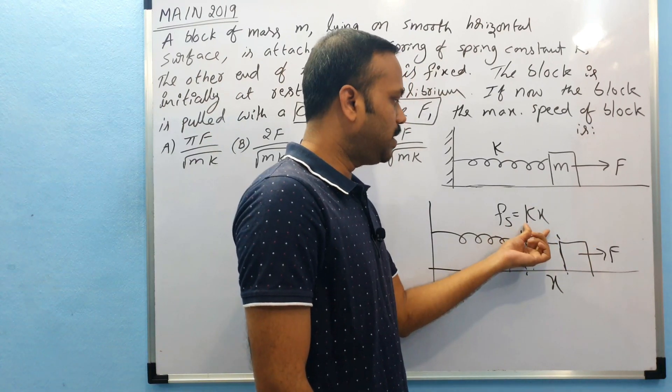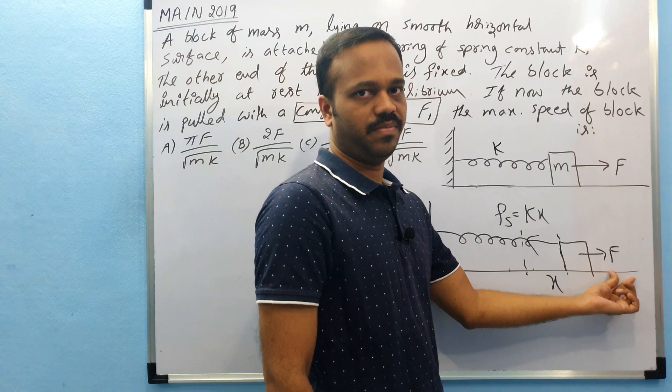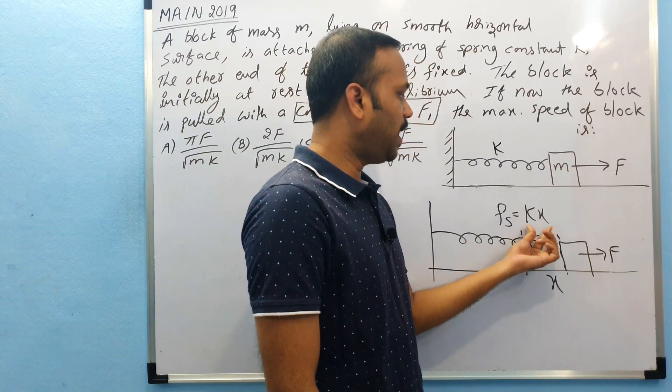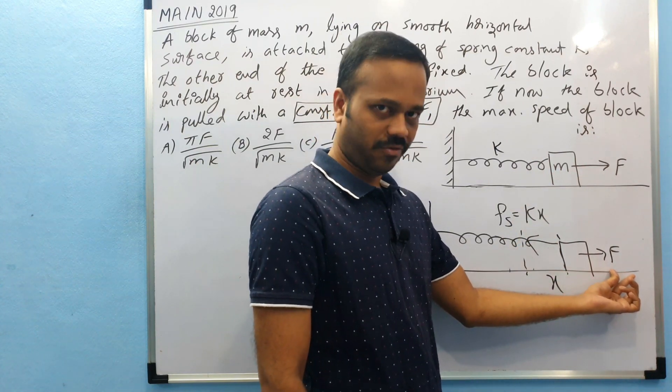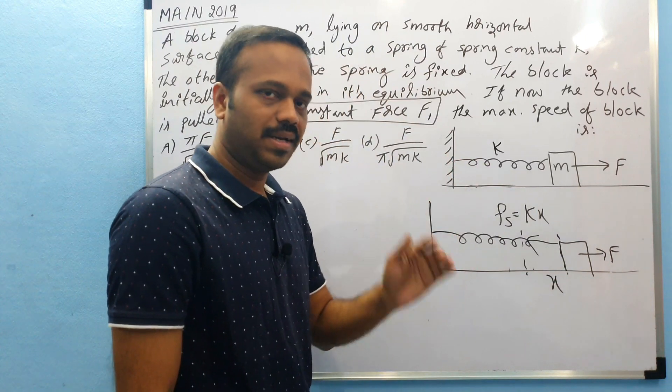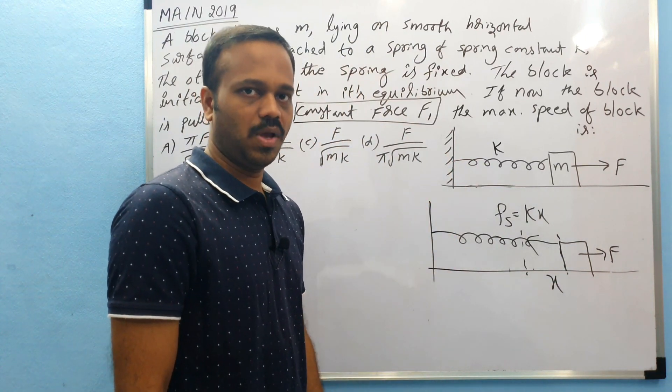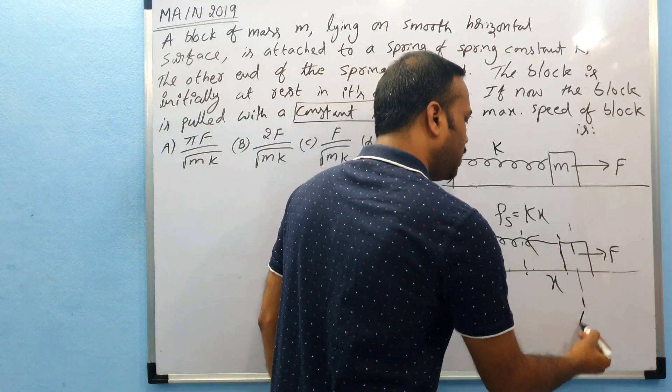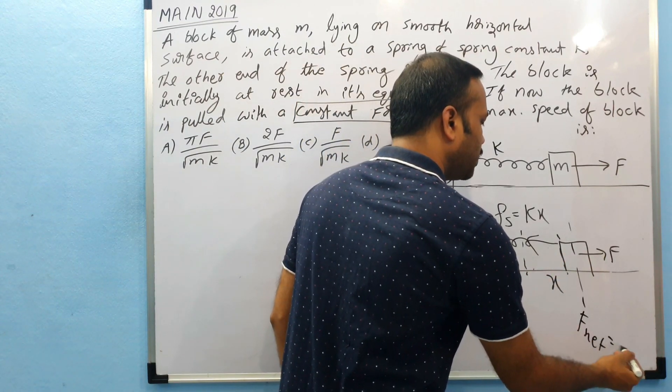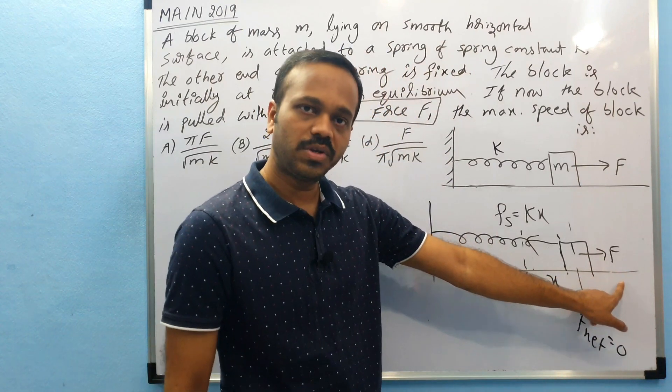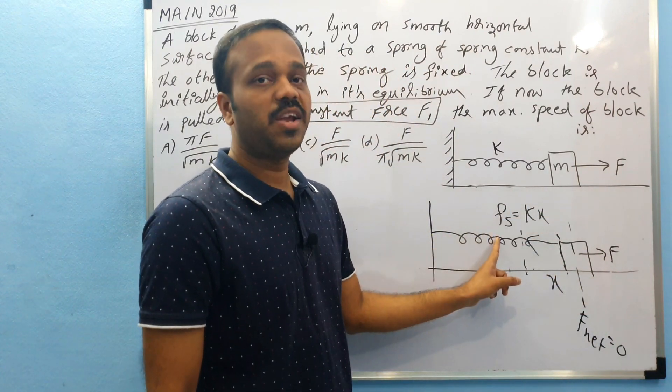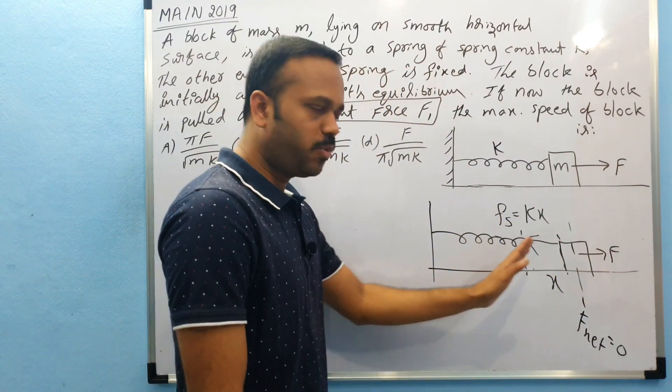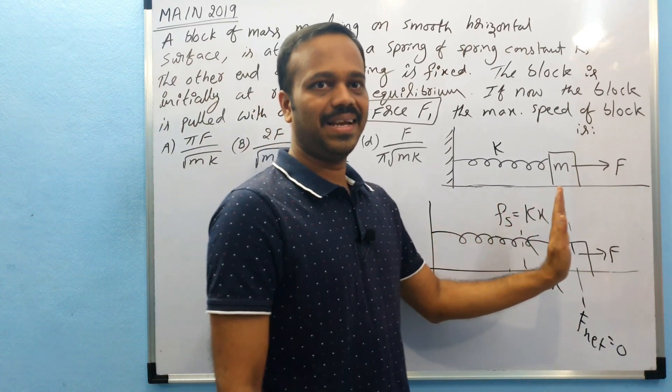At that point, net force is zero. So let us assume this is the point where we have net force zero, that means the constant force is equal to this spring force kx. Up to here the block will accelerate and it gains velocity as time goes on.